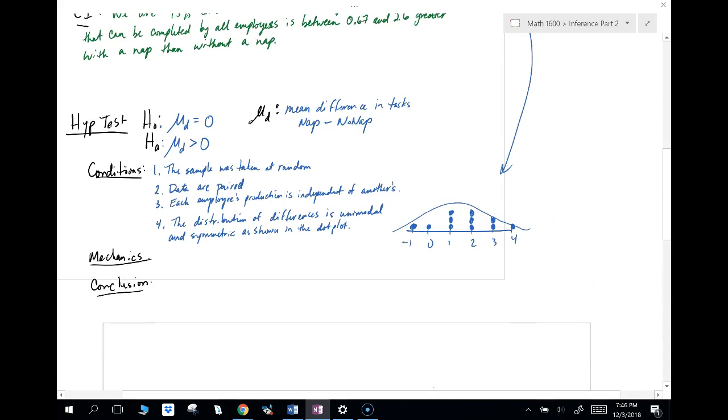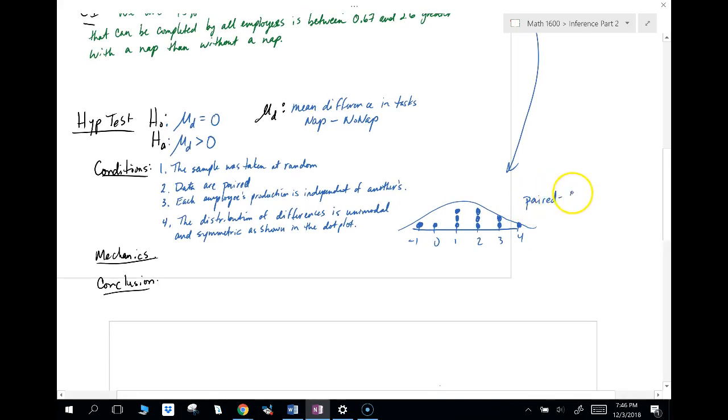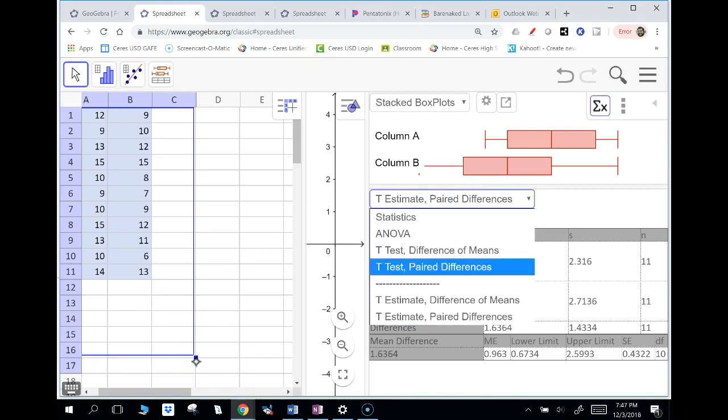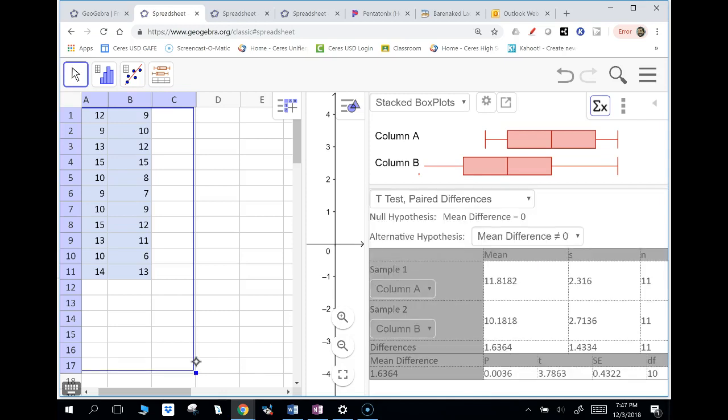So we're going to do a paired t-test. It's always good to say which test you're doing. We're going to do this in GeoGebra again. If you wanted to do this by hand, you could do this by doing just a one sample t-test. If you have a calculator, like a TI-inspire or TI-84, it'll do this as well. So we're going to go back to GeoGebra. I'm going to go t-test for paired differences. And the mean difference right here, it's defaulted as not equal to zero, but we want this to be greater than zero.